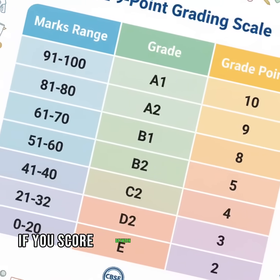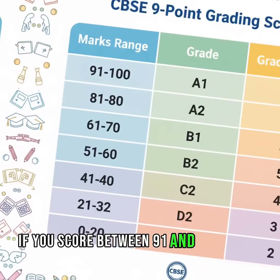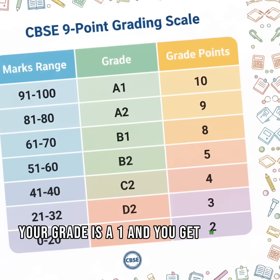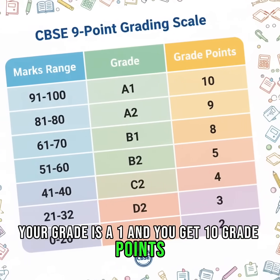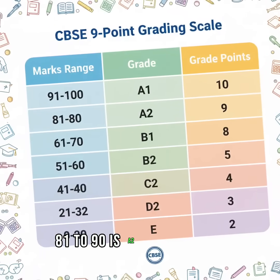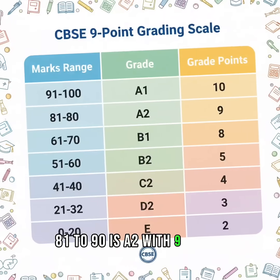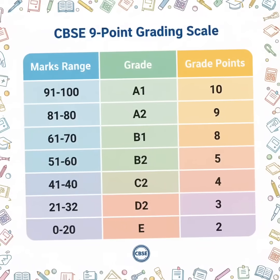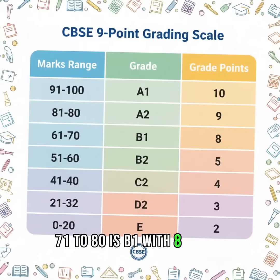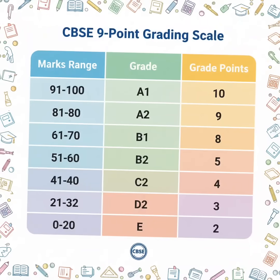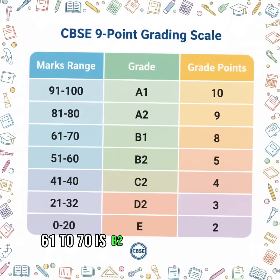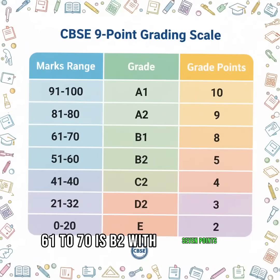If you score between 91 and 100 marks, your grade is A1, and you get 10 grade points. 81 to 90 is A2 with 9 points. 71 to 80 is B1 with 8 points. 61 to 70 is B2 with 7 points.